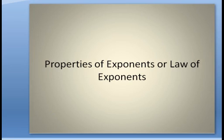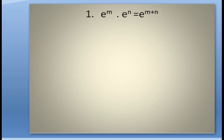Let's start with the properties of exponents, or as I said, you can say law of exponents. The first property is e to the power m multiplied by e to the power n is equal to e to the power m plus n.